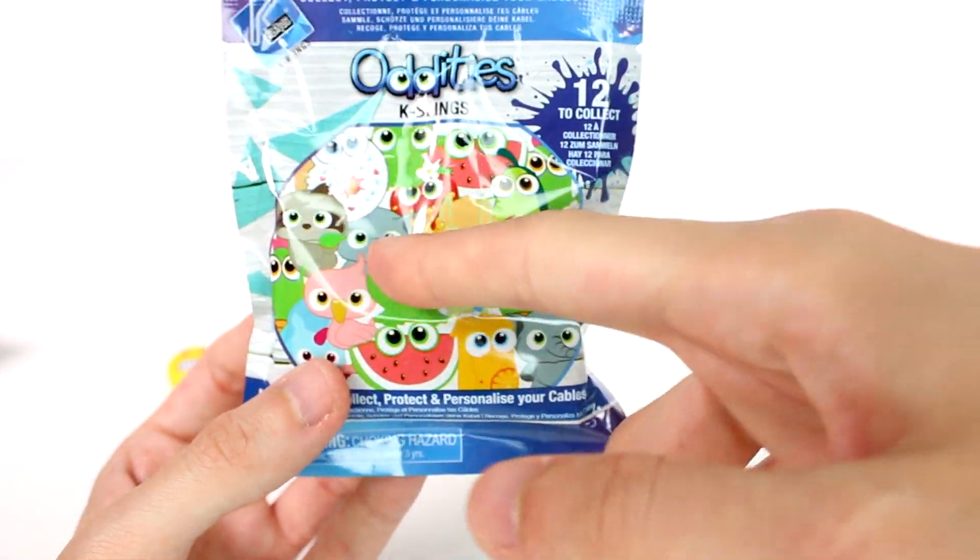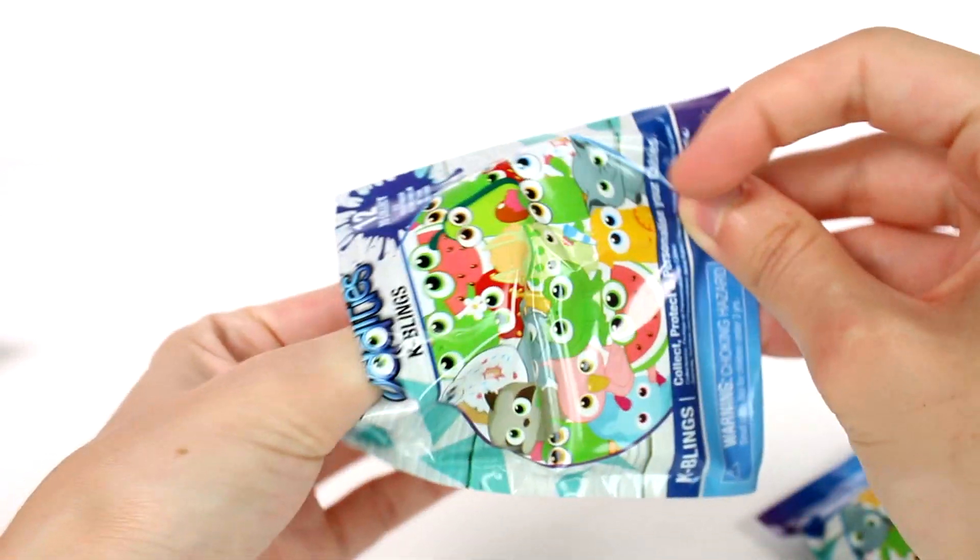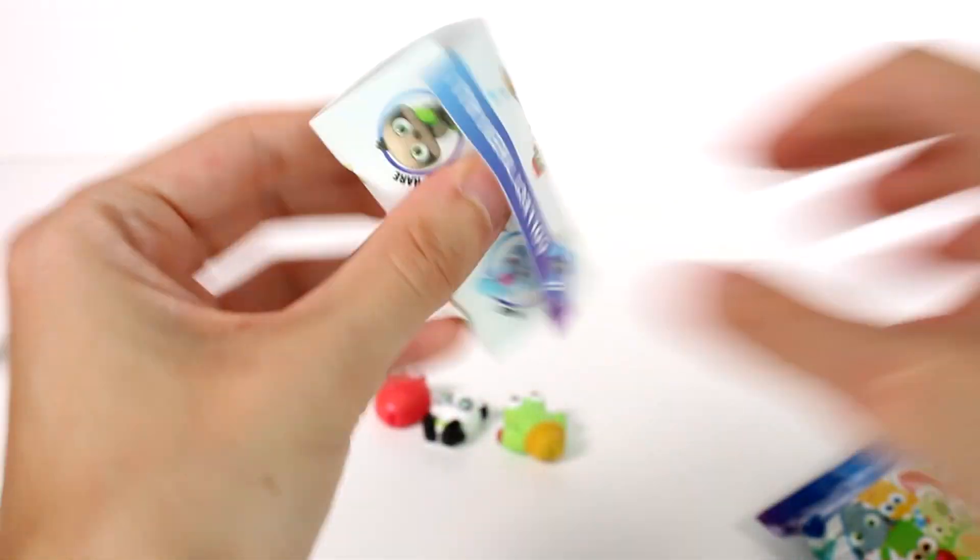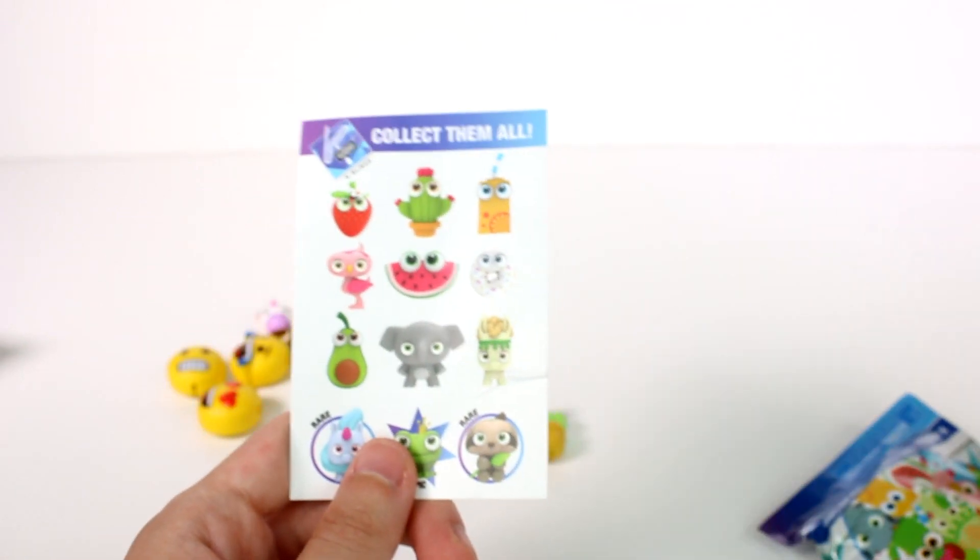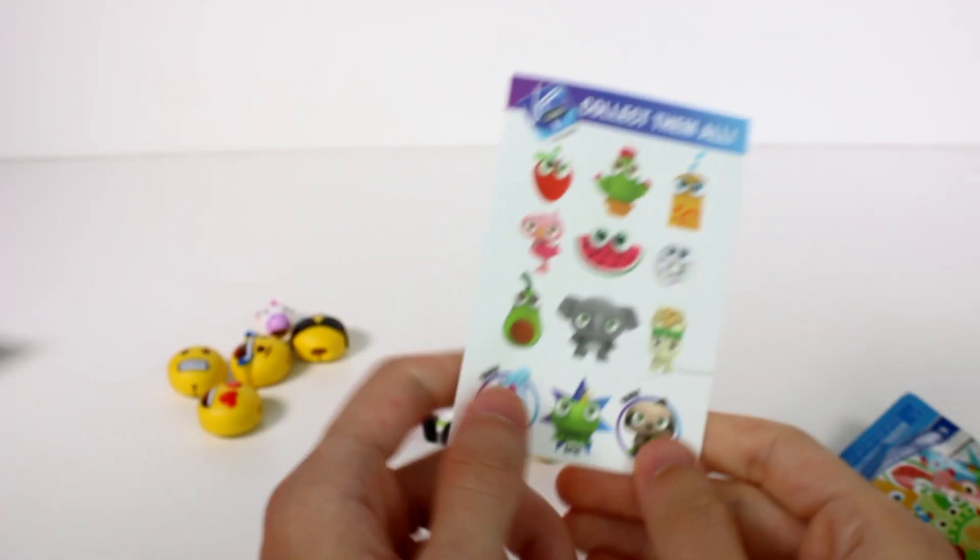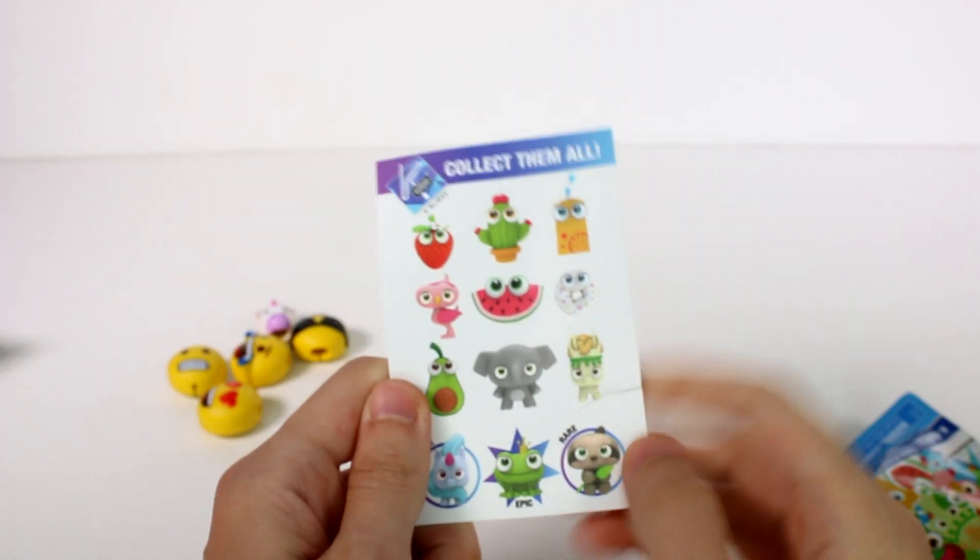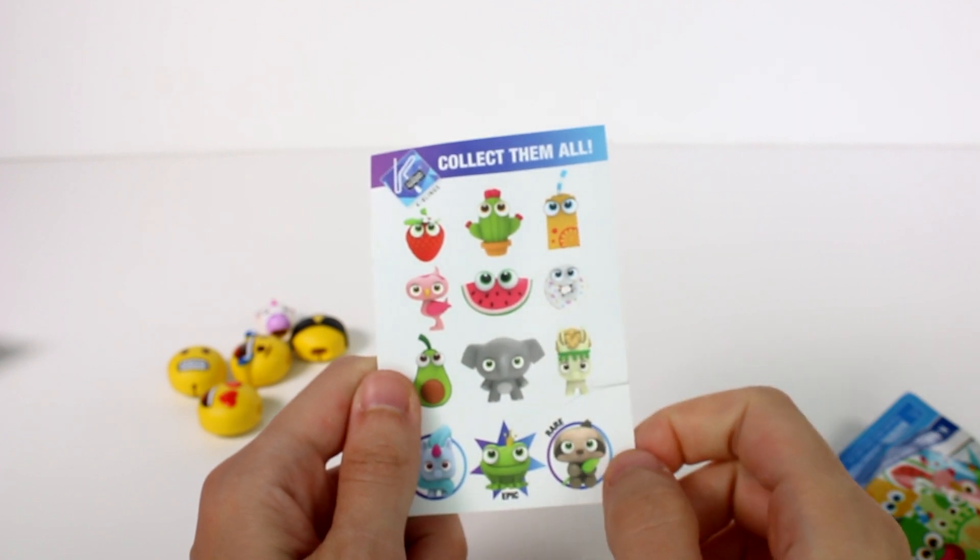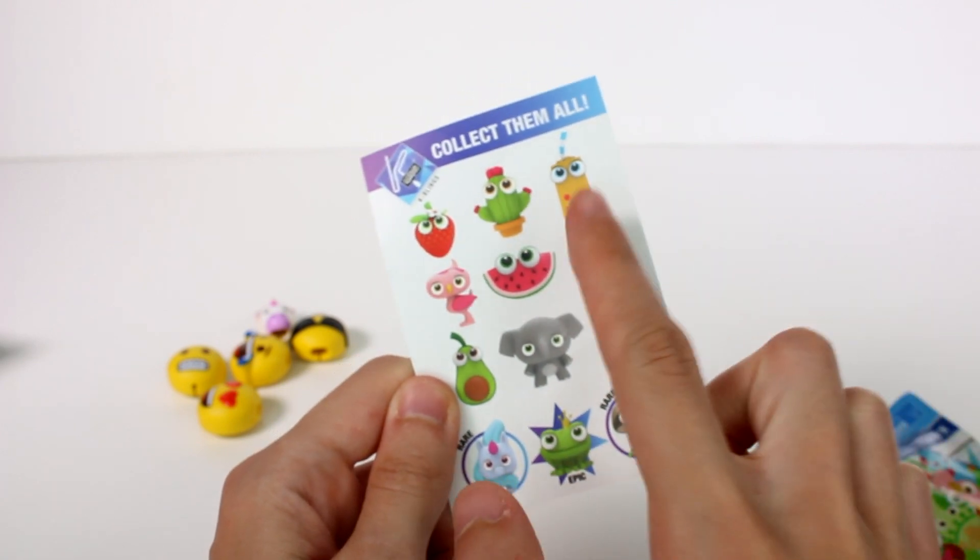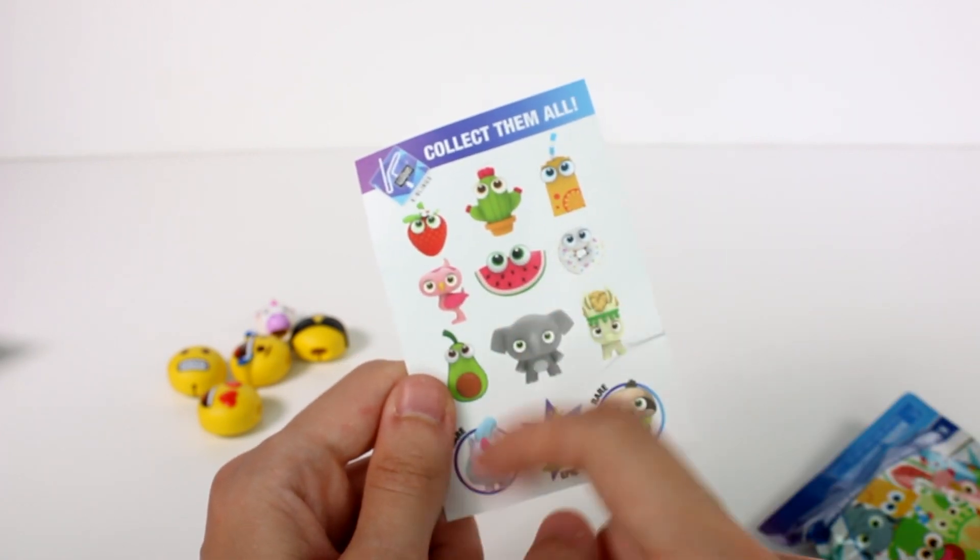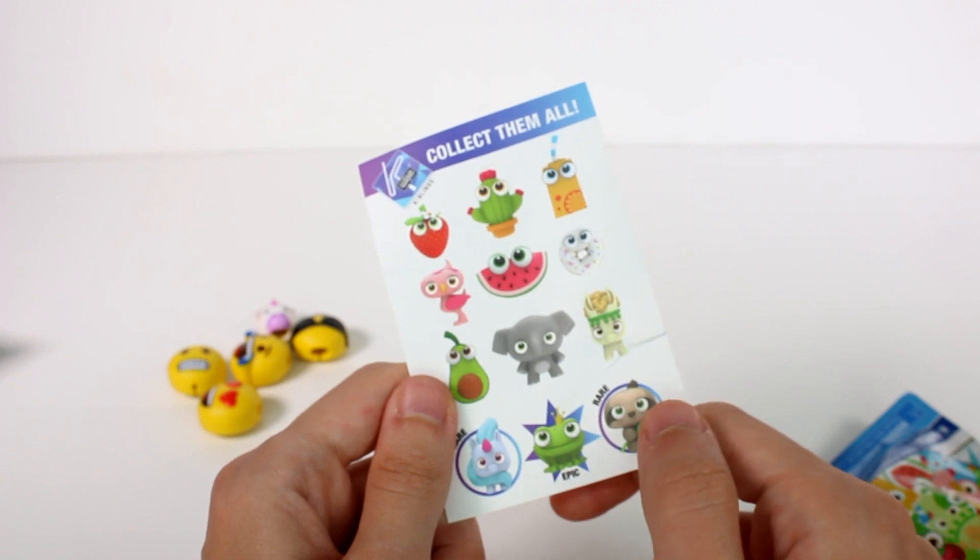We're moving on to the blind bags. Just look at all of these. There's 12 different ones to collect. I'm gonna find that little elephant. They're also cute. Is that a juice box? That's so cool. Let's see, okay, here is our checklist. These are the ones we can collect with the little donut that one looks so delicious. It looks like the unicorn and the sloth are rare, and then this frog is epic. I want to find this juice box, the watermelon, the donut, the elephant. Yeah, those are the ones I want to find.